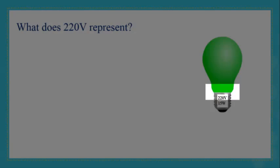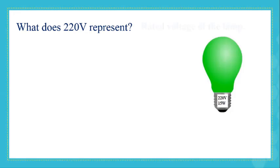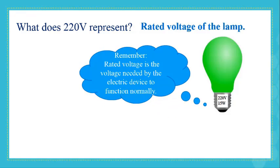When we buy a lamp, we notice certain inscriptions written on it. What does the inscription 220V represent? It represents the rated voltage of the lamp. The rated voltage is the voltage needed by an electric device to function normally. In this case, the lamp needs 220V to function normally.